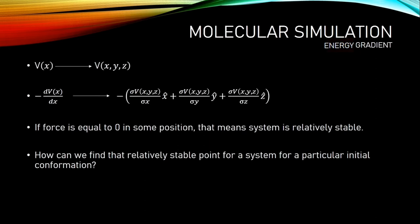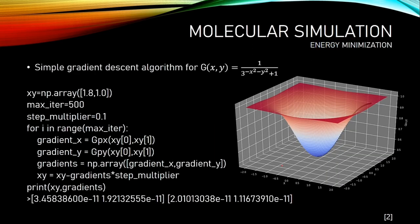So, how can we find the stable point for a specific initial conformation? Here, simple gradient descent algorithm for G-function. I visualized that function for better understanding. In that point, x is 1.8 and y is 1.0. This is our initial point.